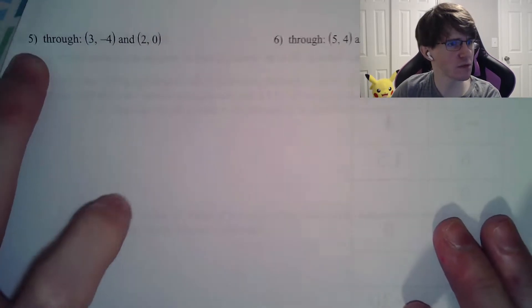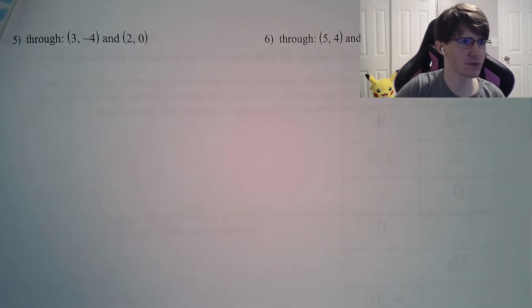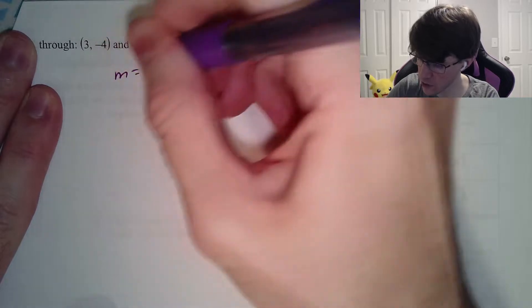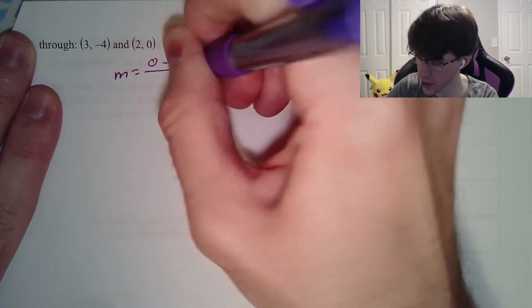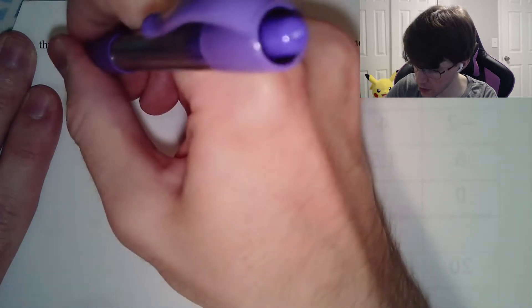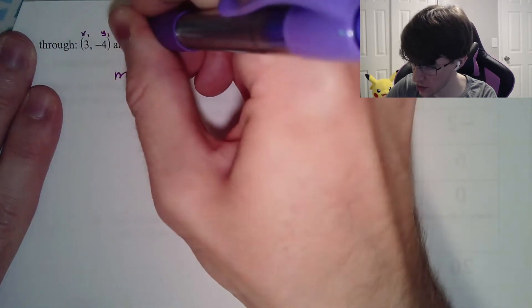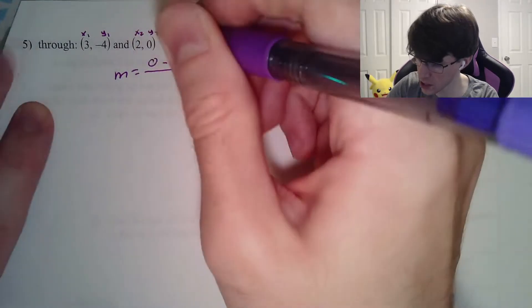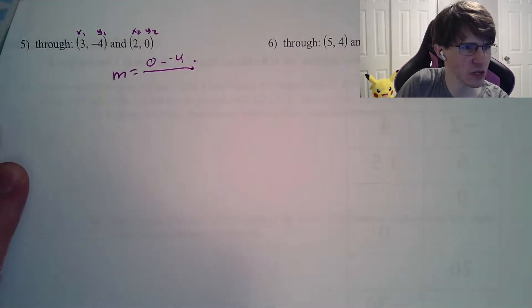Question number 5 — you're going through the coordinate, finding the point-slope and the slope-intercept. Now you don't have the graph, so you have to use the formula. Our m is 0 minus negative 4. It can be helpful for some students to actually write out: x1 equals 3, y1 equals negative 4, x2 equals 2, y2 equals 0, and then plug directly into the y2 minus y1 over x2 minus x1 formula.